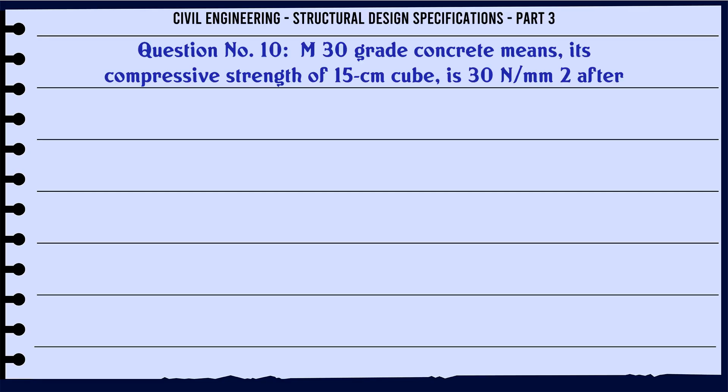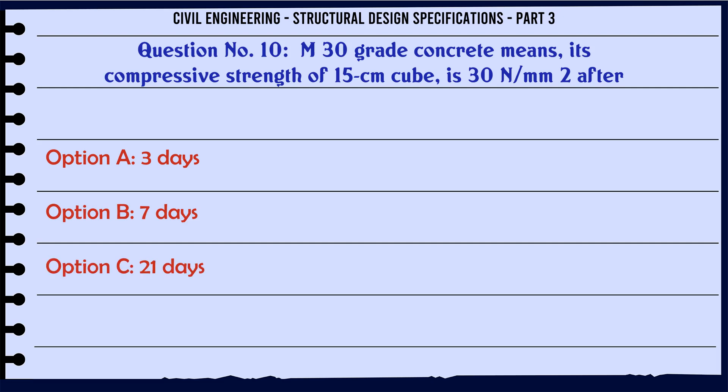M30 grade concrete means its compressive strength of 15 cm cube is 30 N/mm² after: a. 3 days, b. 7 days, c. 21 days, d. 28 days.